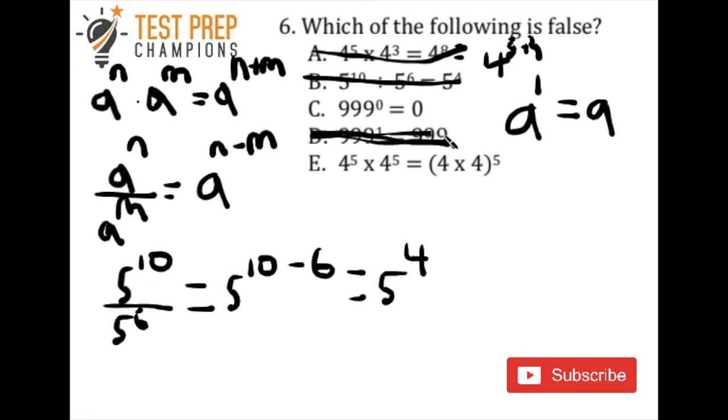I've got the microwave going off in the background, so let me try to keep this fast so you don't have to listen to that while you try to concentrate on my voice at the same time. So e, 4 to the 5th times 4 to the 5th equals 4 times 4 to the 5th.